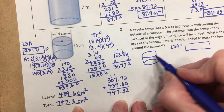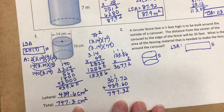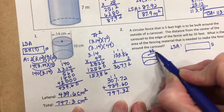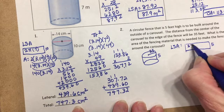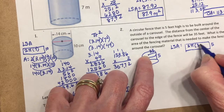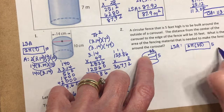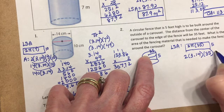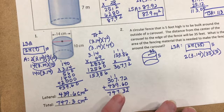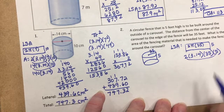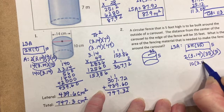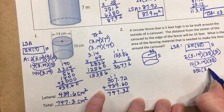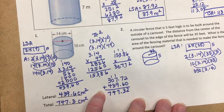The fence is 5 feet high, giving the rectangle's height. The radius is 35 feet, so the length of the rectangle is the circumference: 2 times pi times 35. The lateral surface area equals 2 times 3.14 times 35 times 5. Simplifying: 2 times 5 is 10, times 35 is 350, then 350 times 3.14.